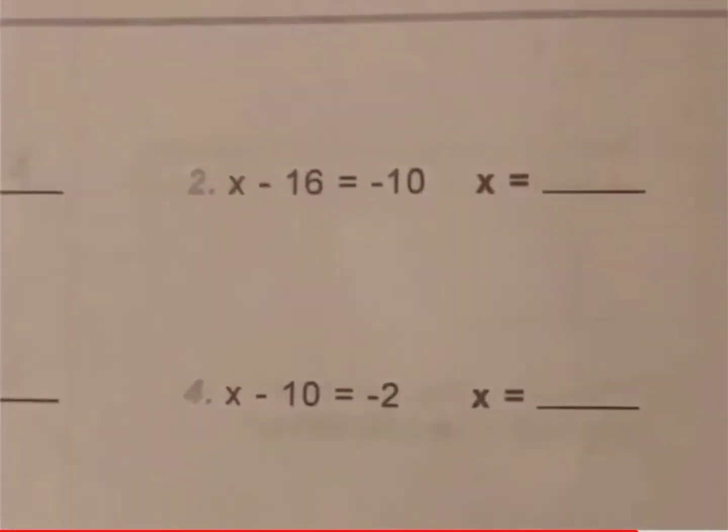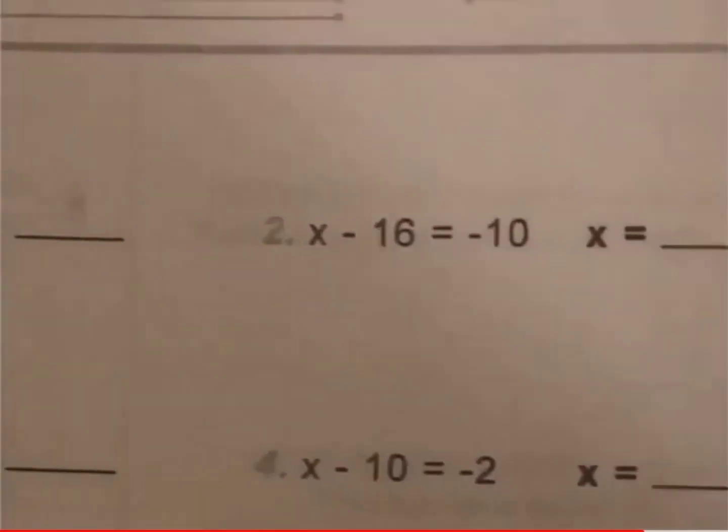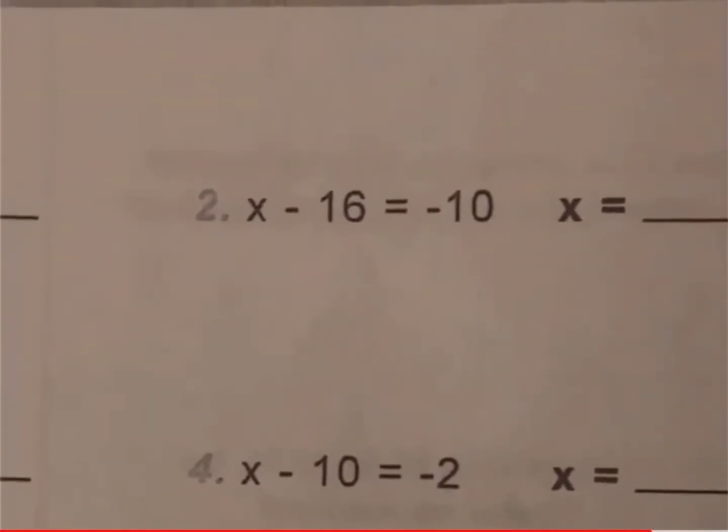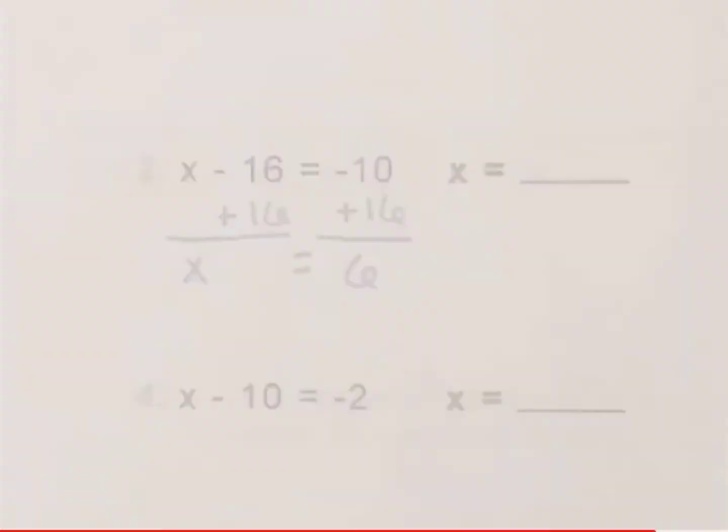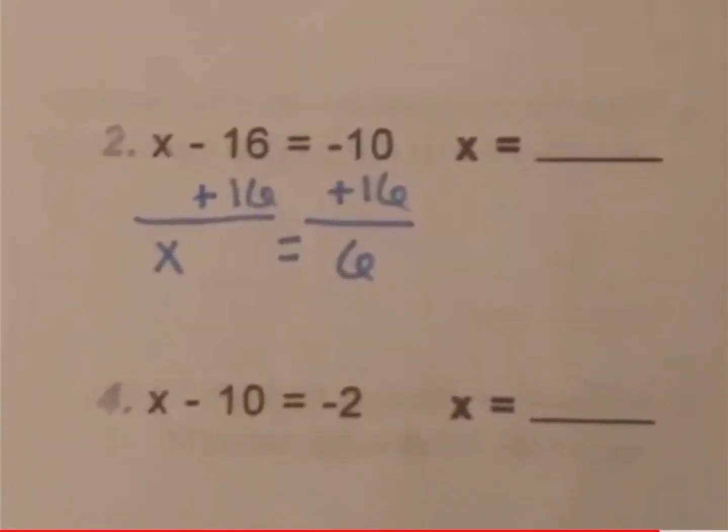On number 2, you have x minus 16 equals negative 10. Well, again, you want to get the x on the side all by itself. So, the inverse of subtraction is addition. So, you will add 16 to both sides. And, when you do, you end up with x equals 6.